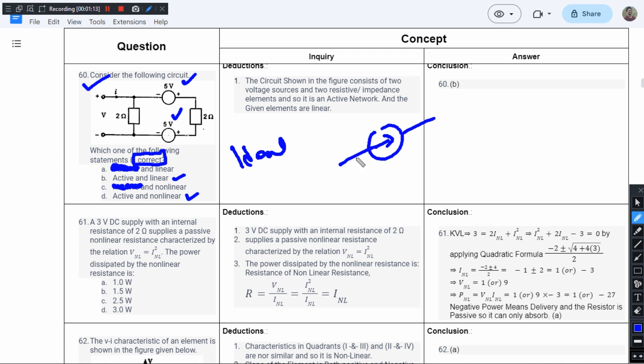In current sources and voltage sources, we have internal resistances. Whenever we have internal resistances, these resistances will get added up with the resistance that is there in the circuit.